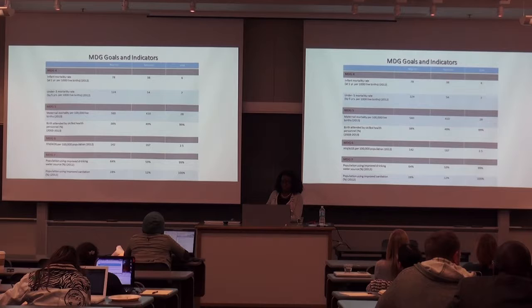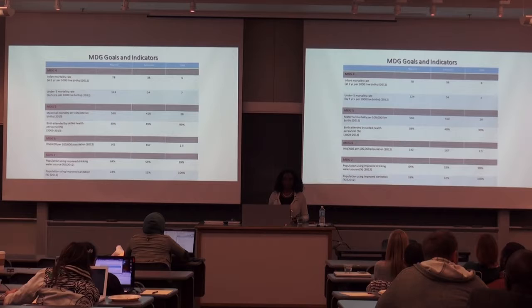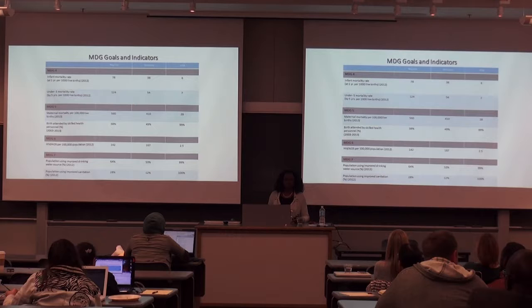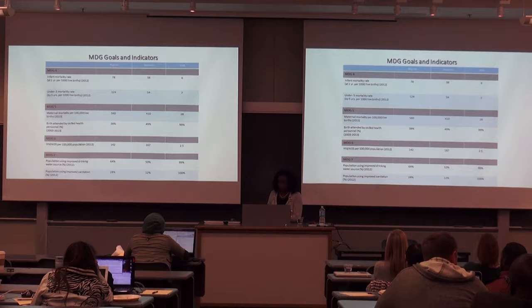For under-five mortality — children who die before age five — it's 124 for Nigeria, 54 for Tanzania, and seven for the United States. In the United States, this number should be zero, but we have health disparities here as well. A segment of the US population is not doing well — similar to what we see in sub-Saharan Africa. The overall US average reflects everyone, including those doing very poorly, which is why those numbers appear.